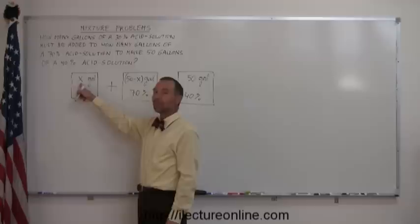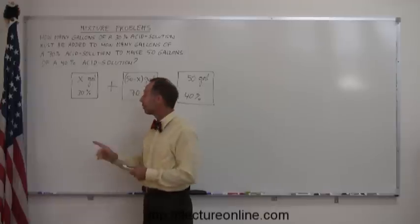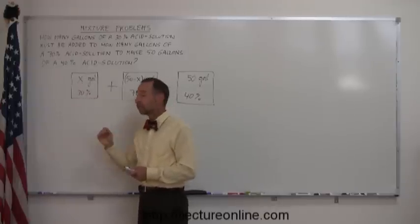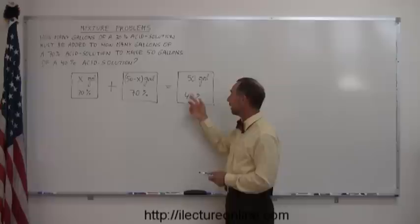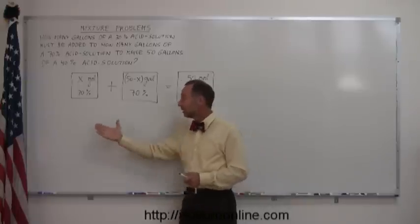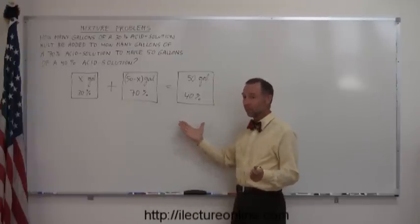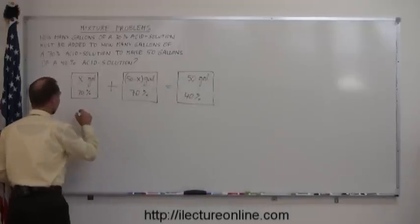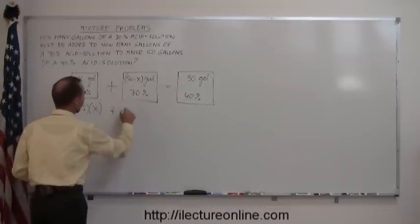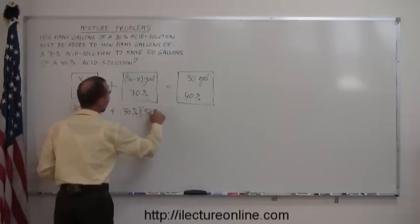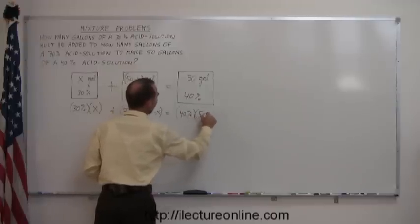The product of the amount of gallons that you have with the percentage of acid that you have in the solution, that gives you the total amount of acid. So, if I multiply these together, I get the amount of acid I have in this solution. If I multiply these two together, I have the amount of acid I have in this solution. And the amount of acid in this solution, plus the amount of acid in this solution, equals the amount of acid in this solution. So, simply put in algebra, in algebraic terms, we write 30% times x plus 70% times 50 minus x equals 40% times 50.